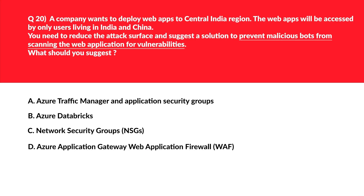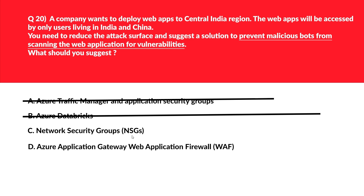The next question is a bit tricky. Option A — Azure Traffic Manager and Application Security Groups: Traffic Manager is DNS-based routing for performance and speed, so it cannot prevent malicious bots. Option B — Azure Databricks: this is a data analytics service, not a security service, so it's out. Option C — Network Security Groups (NSGs): NSGs cannot prevent malicious bots; that's not their purpose.